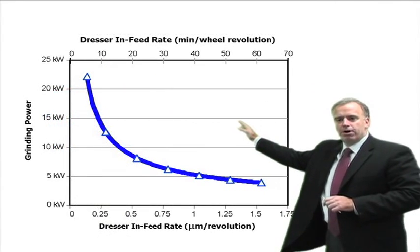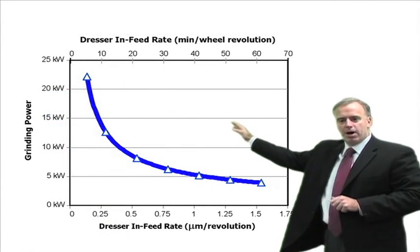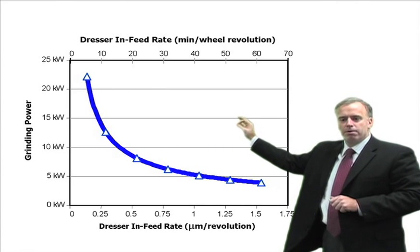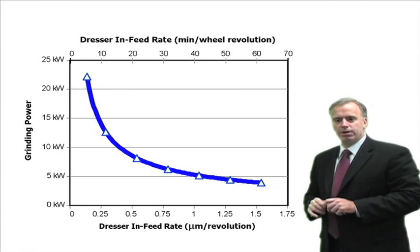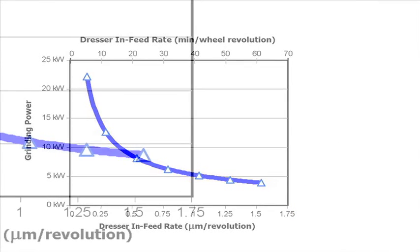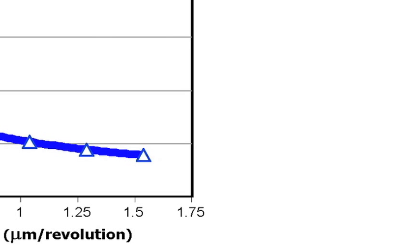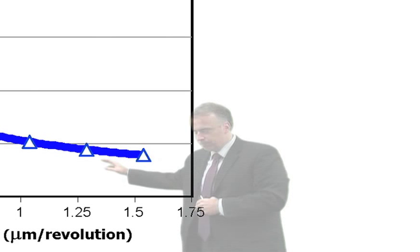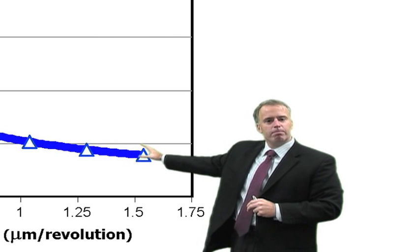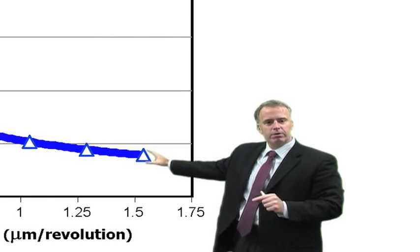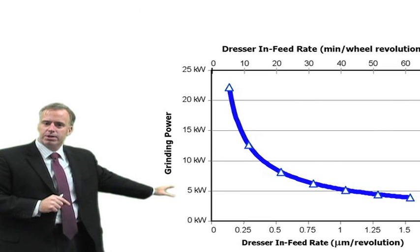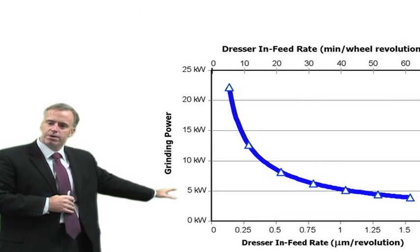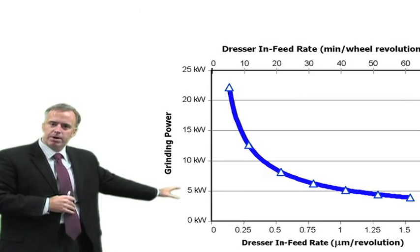This chart shows grinding power based on how fast or deep we plunge the diamond roll into the workpiece. If we plunge in at 1.5 microns per wheel revolution, we generate only about 5 kilowatts of power. Of course it depends on the grinding operation, but in this case 5 kilowatts.